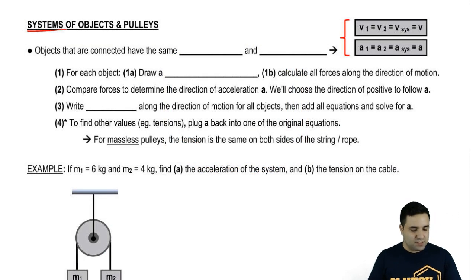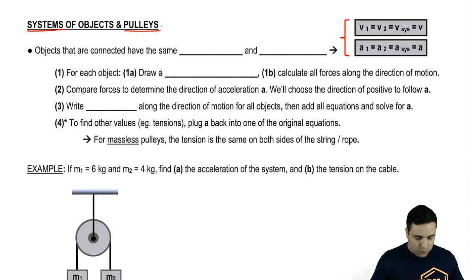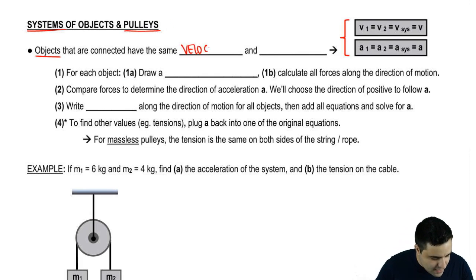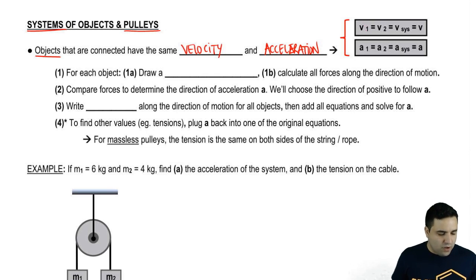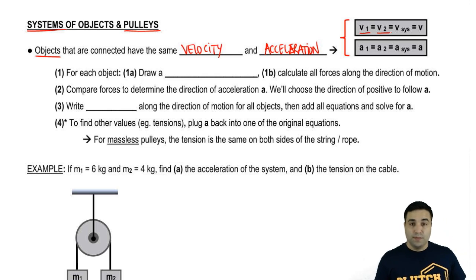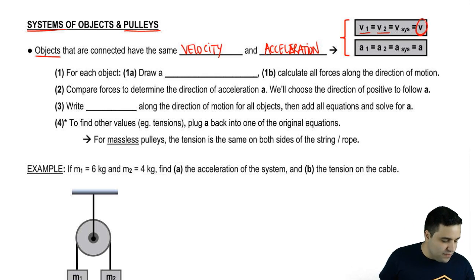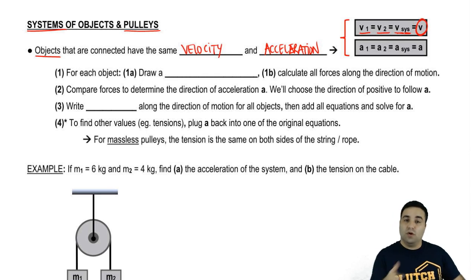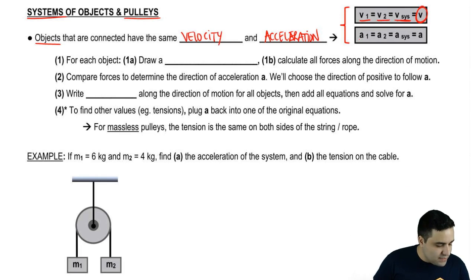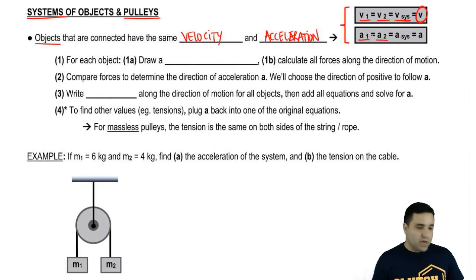A system of objects is just a collection of objects that move together. We're going to have some pulleys, as you can see down here. The first thing you need to know is that objects that are connected will have the same velocity and the same acceleration. They move together, so instead of calling the velocity of the first object v1 and the second v2, since they're the same, I can just call it v. Same thing with the acceleration — A1 and A2 are the same, so we just call it A, giving us one variable instead of two.